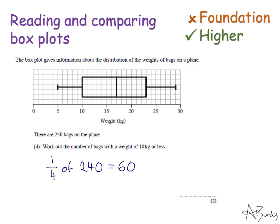So there are 60 bags that weigh 10 kilograms or less. If this question was how many bags have a weight of 17 kilograms or less, that would be half. So that would be 120. The number of bags with a weight of 23 kilos or less would be three quarters. So that would be 180.